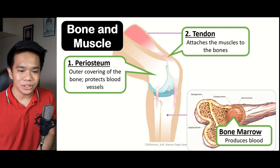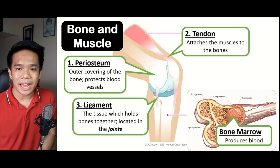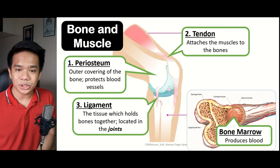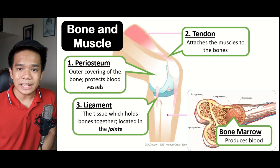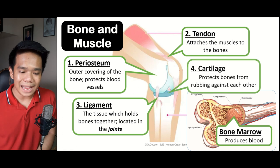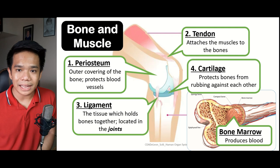Next, we have the tendon, which attaches the muscles to the bone. We have the ligaments, the tissue that holds two bones together, found within the joints. The joints are considered as the meeting place of two or more bones. And lastly, we have the cartilage, which helps for the protection of the bones against rubbing each other.